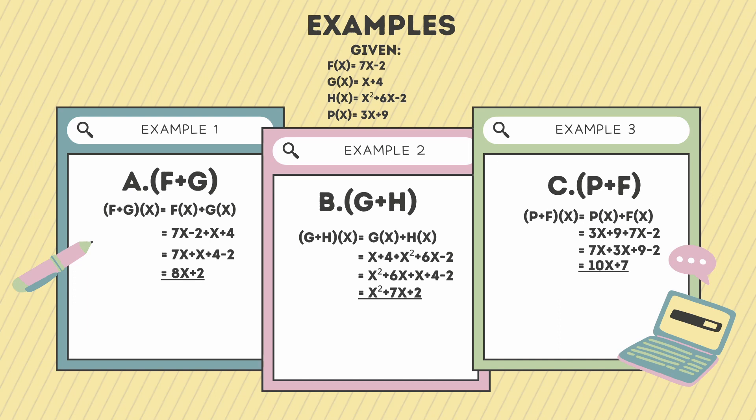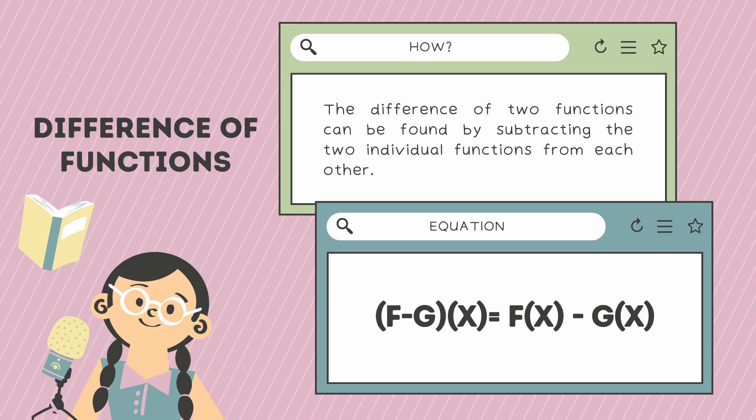Now that I am done explaining what sum of functions means, and now that we know how it works and how to solve it, let's proceed to the difference of functions. The difference of two functions can be found by subtracting the two individual functions from each other. The equation for the difference of functions is: (f − g)(x) = f(x) − g(x).